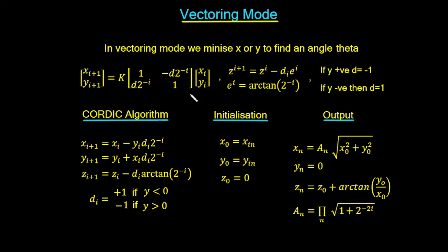What we have seen so far is a CORDIC algorithm used in something called Vectoring Mode. We'll talk about some of these terms whenever we go through a video on the history of the CORDIC algorithm. But for the moment, we just accept that it's called Vectoring Mode. In Vectoring Mode, we've seen that what we do is we minimize a value. We minimized the y value and then we used that in order to find an angle theta. So this is Vectoring Mode.